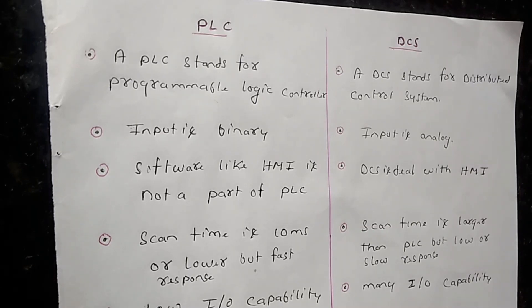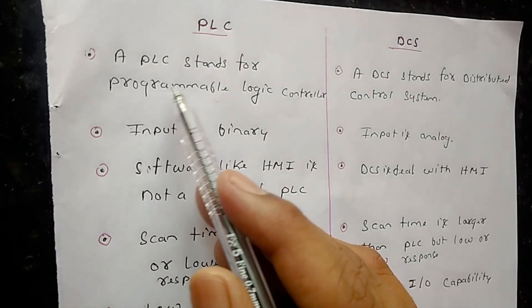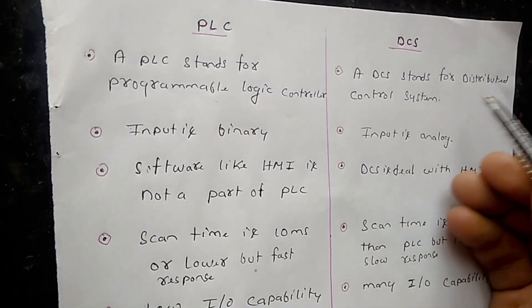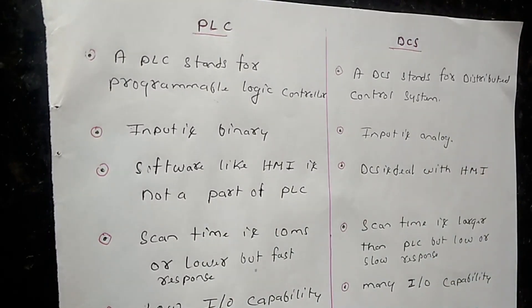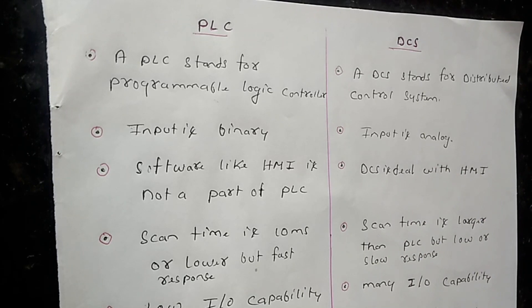Let's start the differentiation between PLC and DCS. PLC stands for programmable logic controller and DCS stands for distributed control system. The input in PLC is binary because PLC is designed for discrete operation, but in DCS the input is analog.